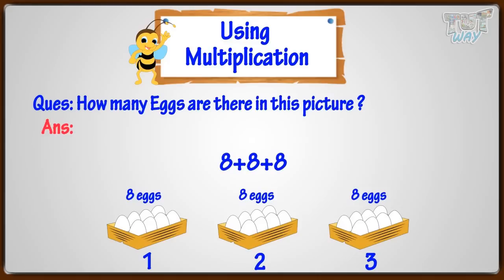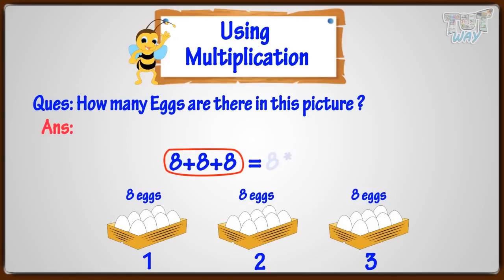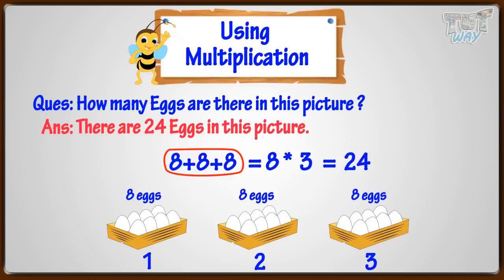Remember, we use multiplication for repeated addition problems. So, instead of adding eight three times, we can multiply eight with three. So, we get twenty-four. There are twenty-four eggs in the picture.